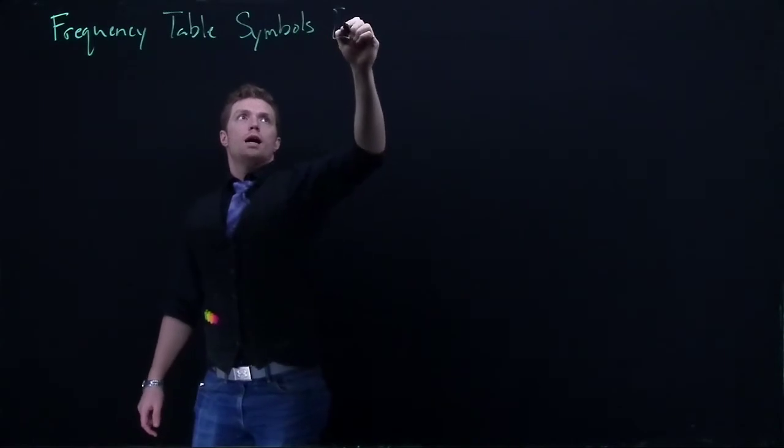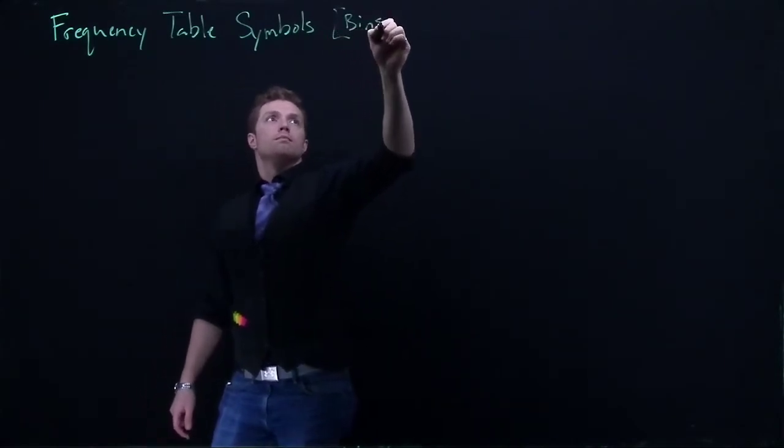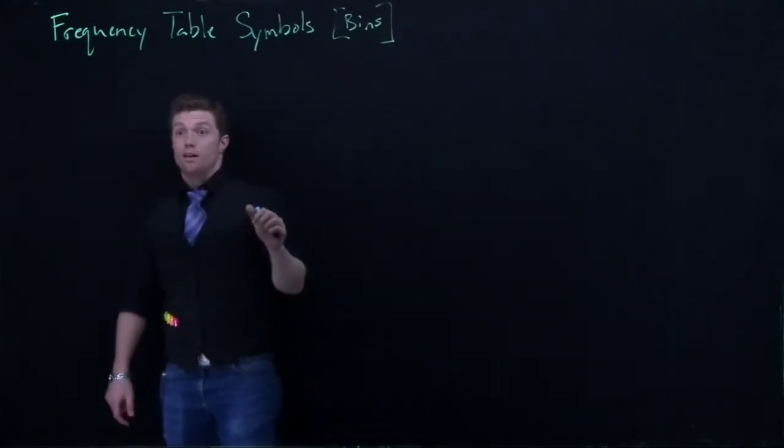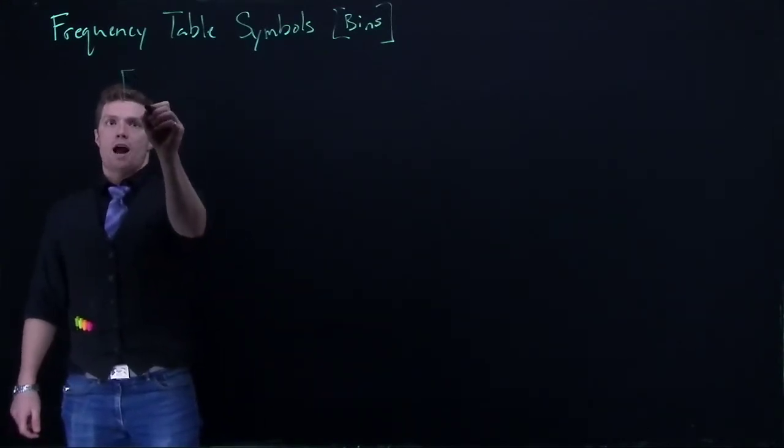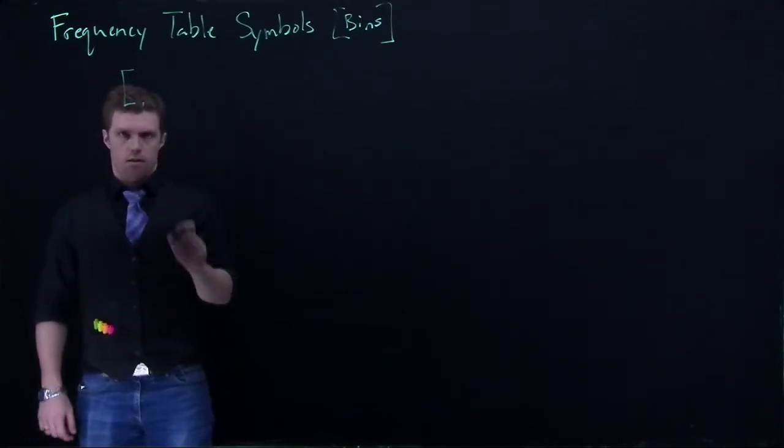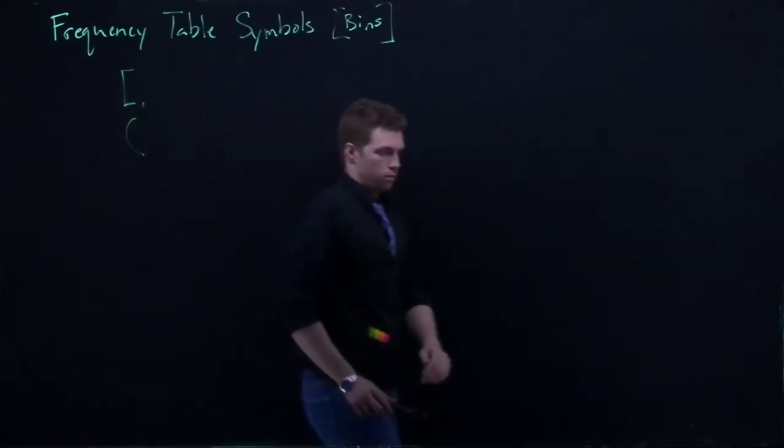And specifically we're talking about bins. Alright, so the two major symbols that we're worried about with bins are brackets and parentheses.